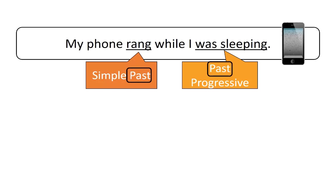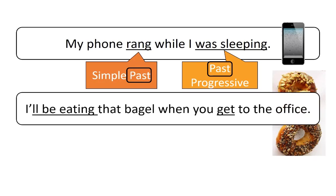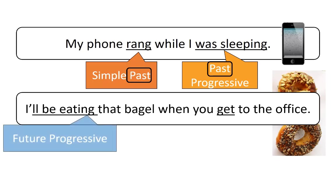You may also remember this example where we use two different tenses with a time clause: 'I'll be eating that bagel when you get to the office.' We know that both of these actions occur in the future regardless of the fact that we are using present tense.